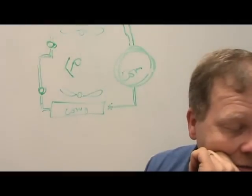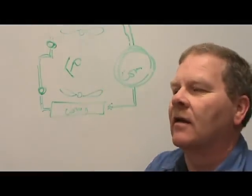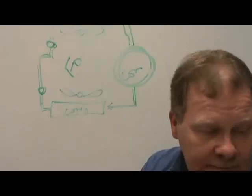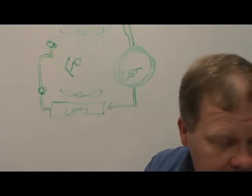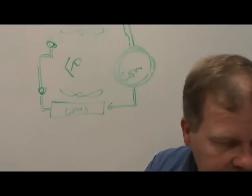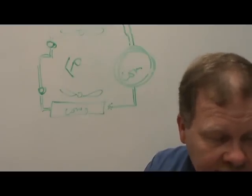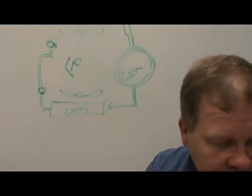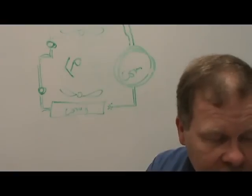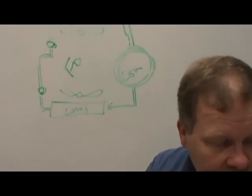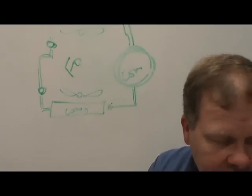An accumulator is similar to a receiver dryer. Number seven — it's placed close to the condenser in some vehicles. Two technicians are discussing an AC problem: Technician A says an overcharge of refrigerant will cause higher-than-normal high-side pressure. Technician B says an overcharge will cause poor cooling. Both of those guys are right.